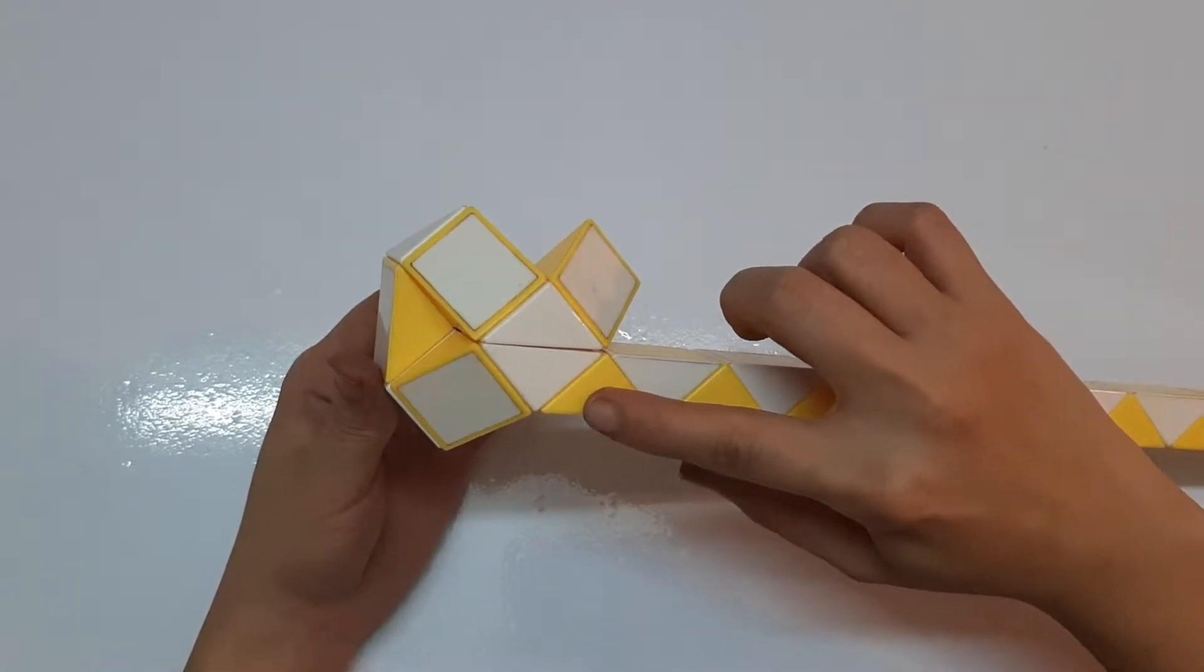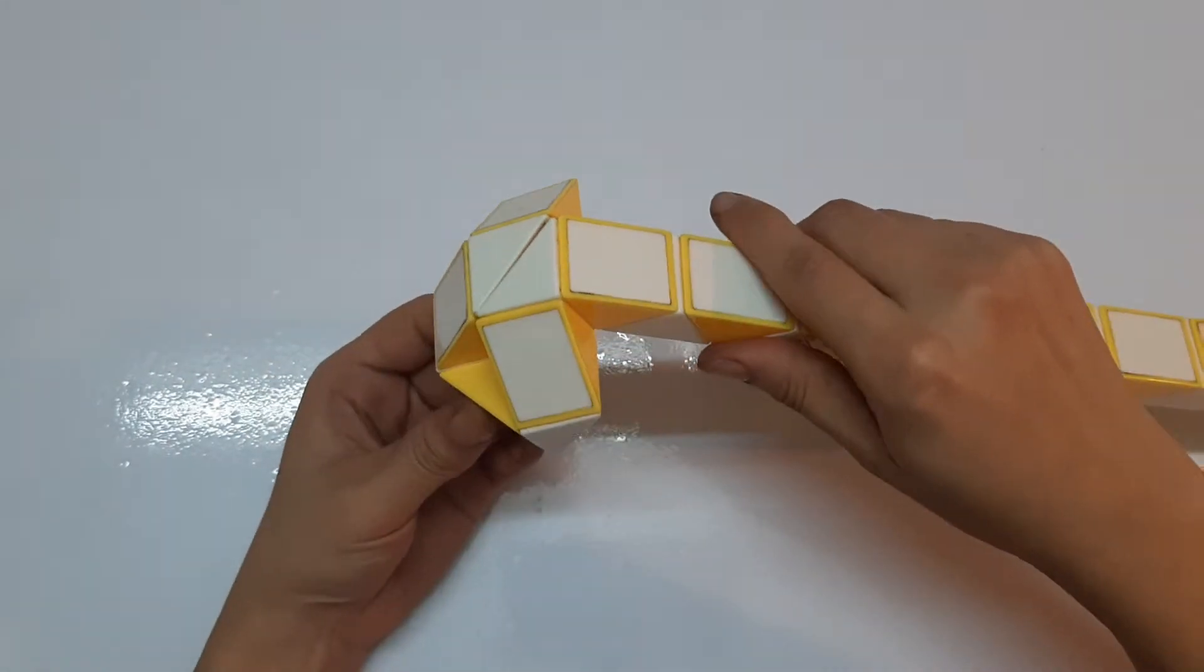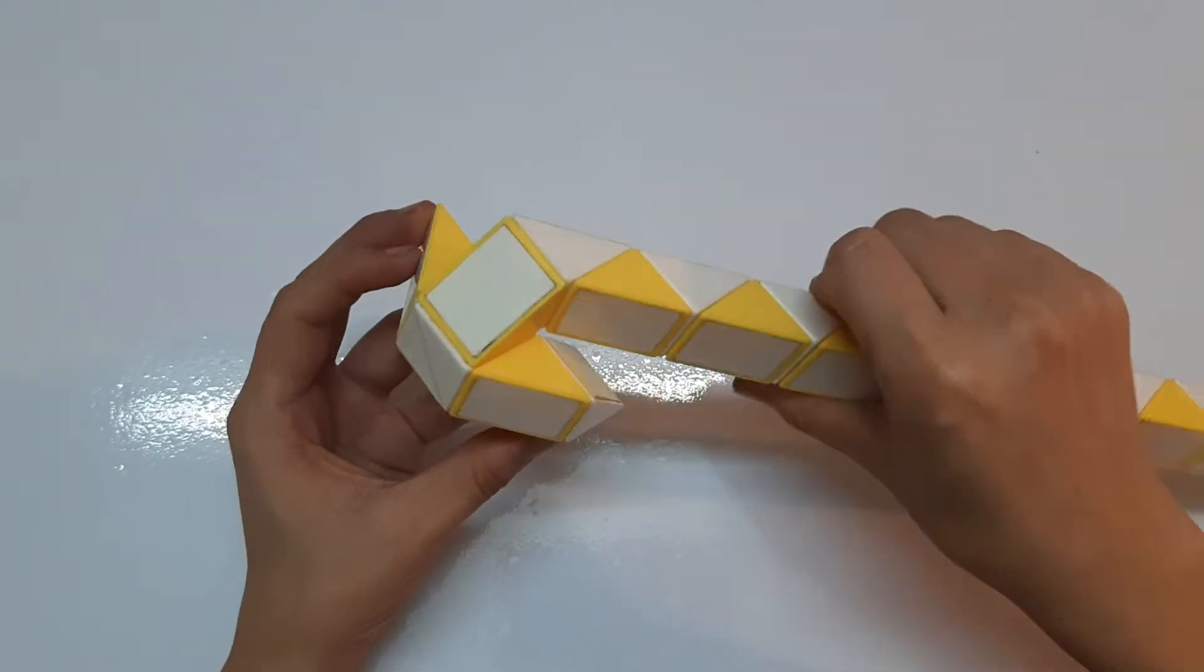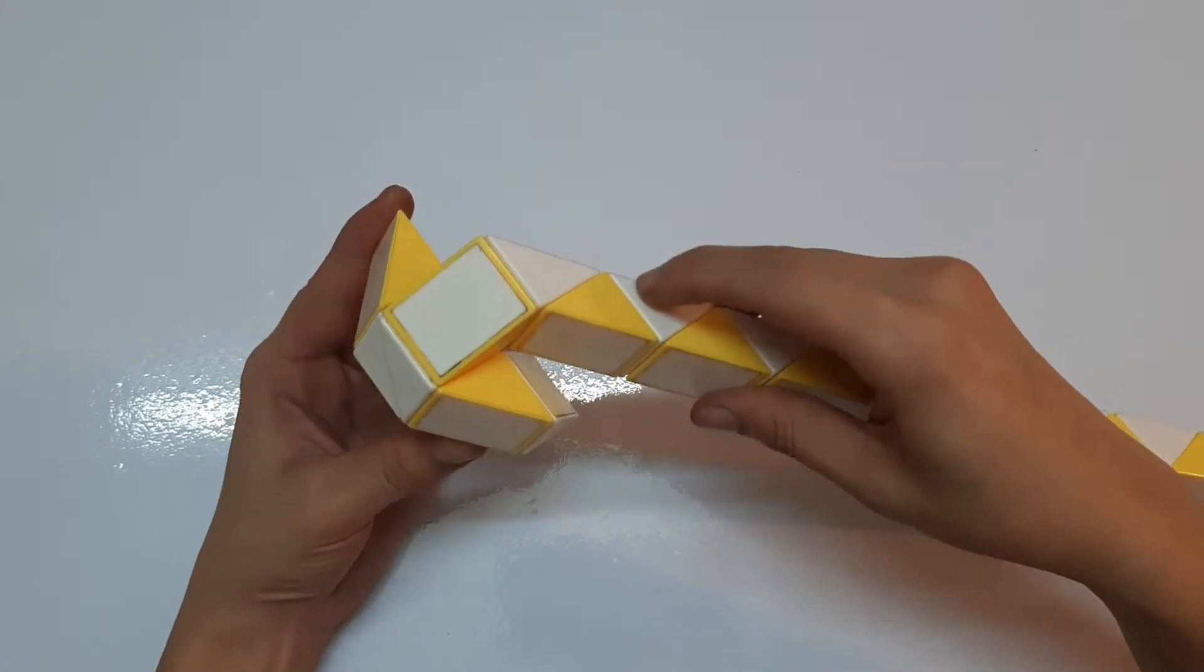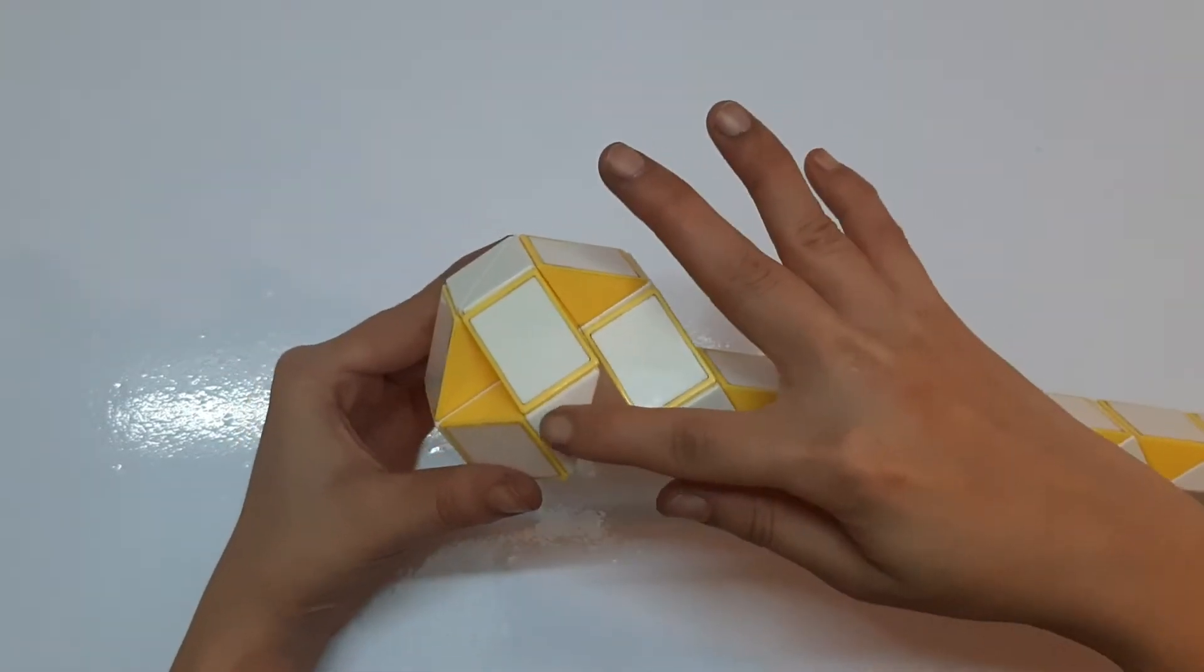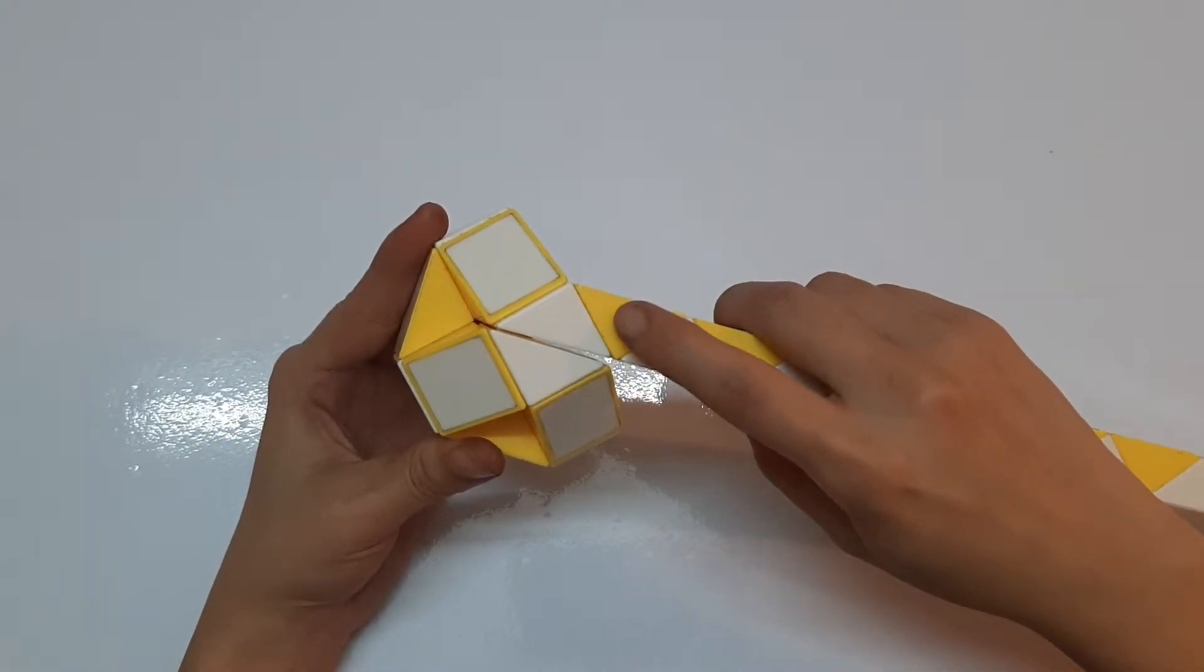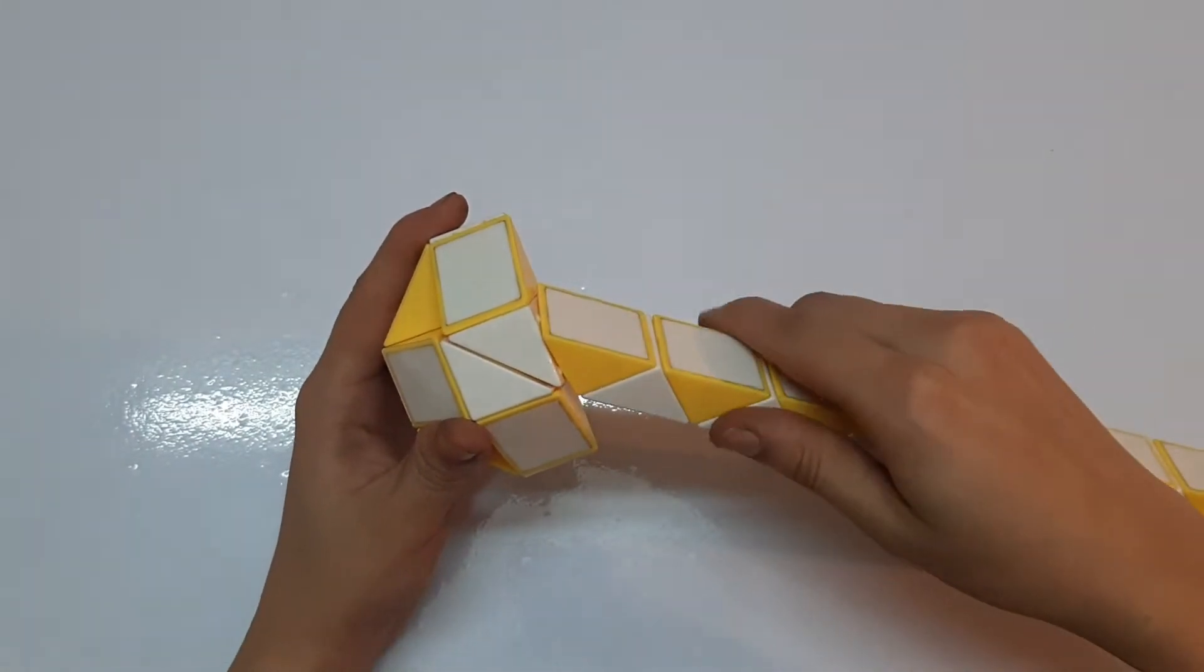The yellow one move to the left. Do the same with the next one. One, two, three. Move to the right. The next one move to the right.